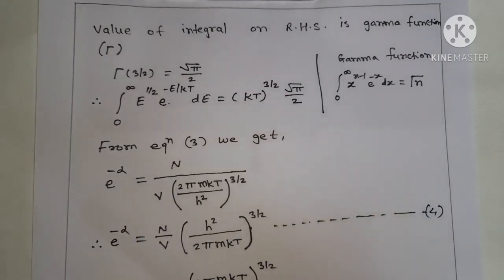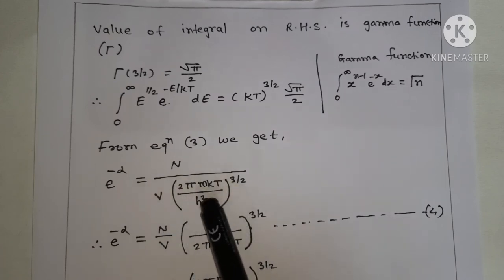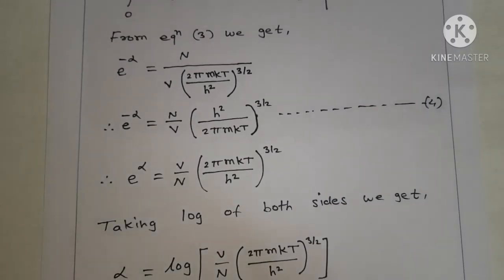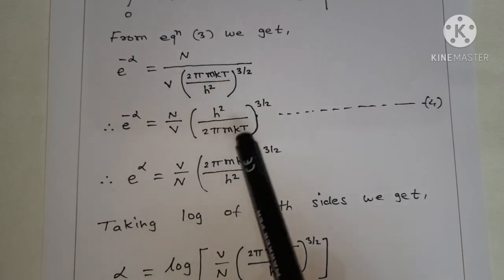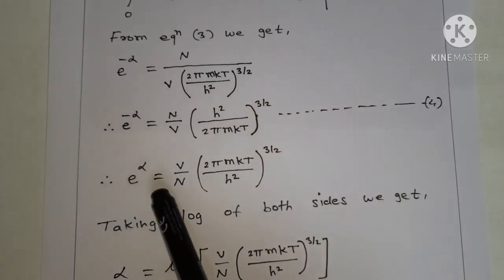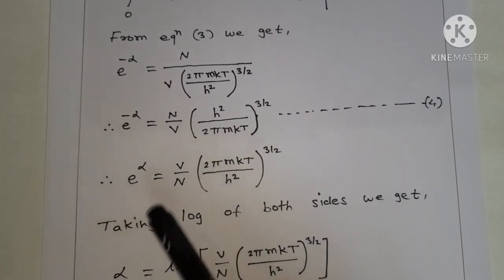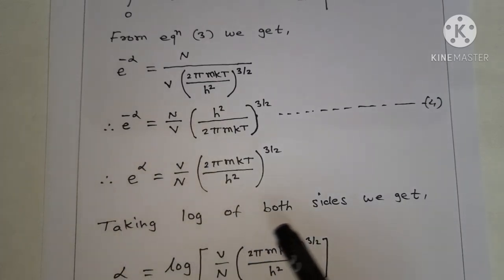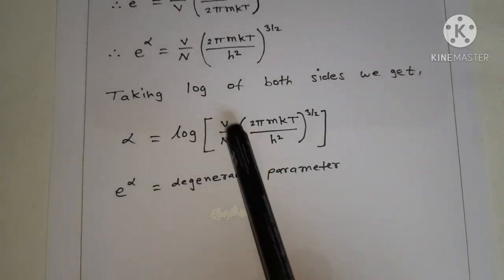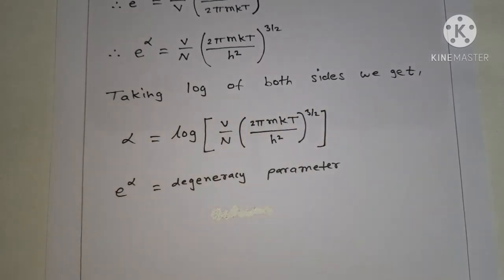So from equation 3 we get e raised to minus alpha is equal to n upon V into (2π mKT upon h squared) raised to 3/2. Rearranging, e raised to minus alpha equals n upon V times (h squared upon 2π mKT) raised to 3/2. Therefore e raised to alpha equals V upon n times (2π mKT upon h squared) raised to 3/2, with the minus sign removed by inversion. Taking log of both sides, alpha equals log of [V upon n times (2π mKT upon h squared) raised to 3/2]. e raised to alpha is the partition function parameter.